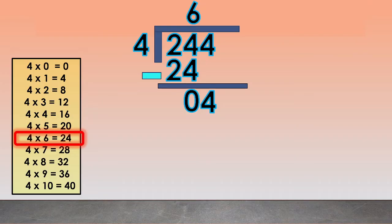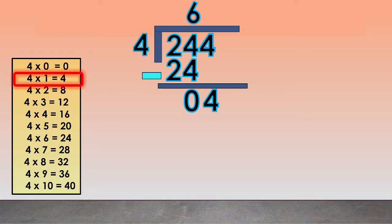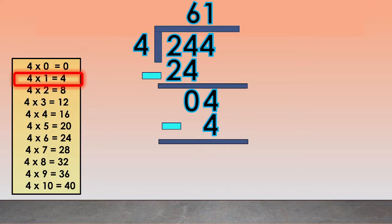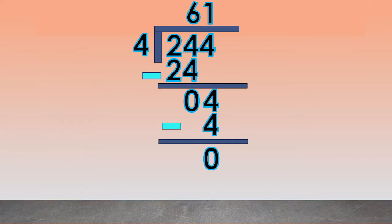It becomes 4. Find how many times 4 goes into 4. Again, we will use the multiplication table of 4 and take the number closest without going over. We will use 4 times 1 equals 4. We write the 1 above the 4. Now multiply 4 times 1 equals 4 and write 4 below the 4. Subtract 4 minus 4 equals 0. Since we are not left with any digits of the dividend to bring down, we are finished. The quotient is 61.